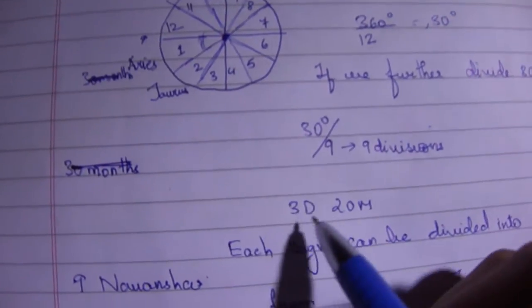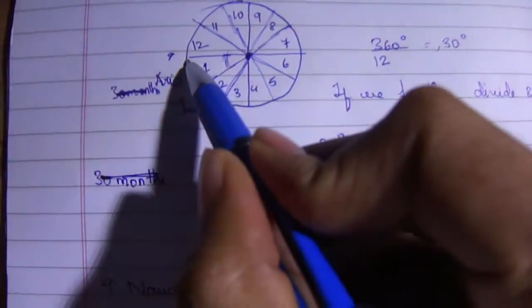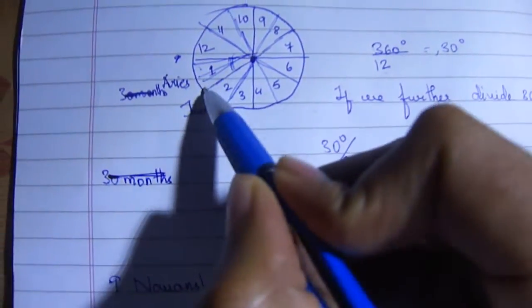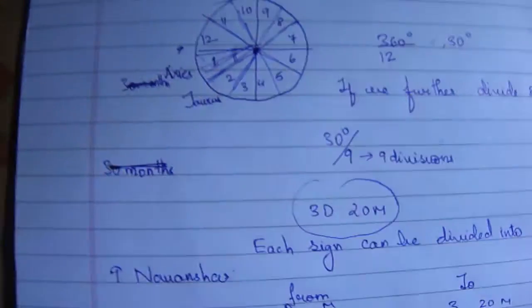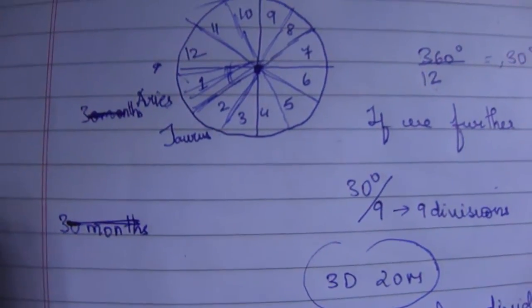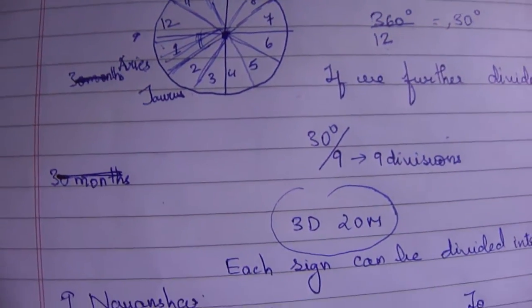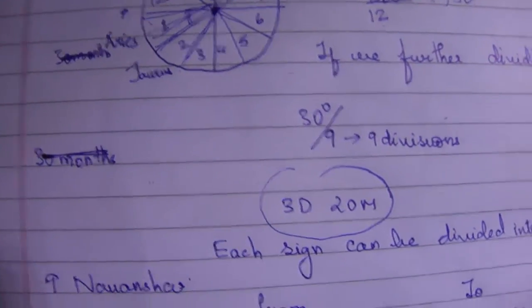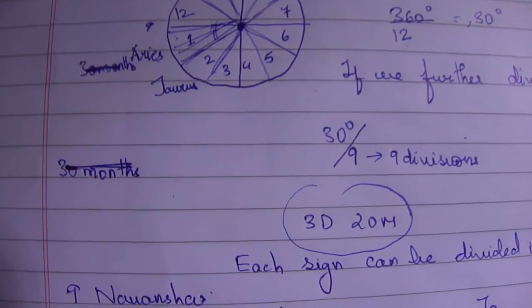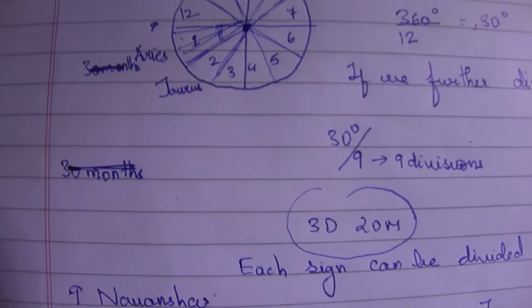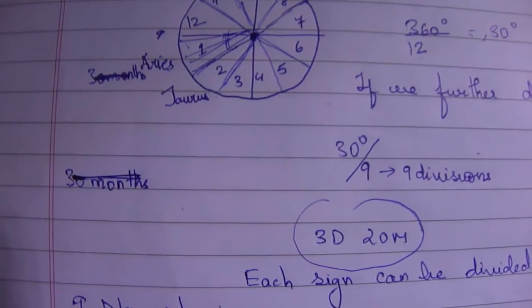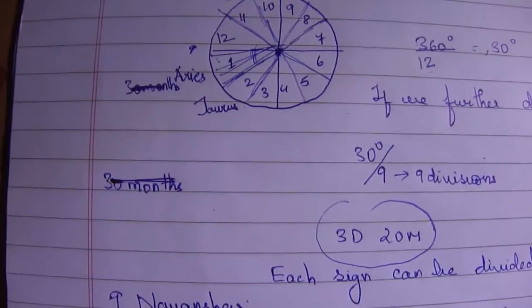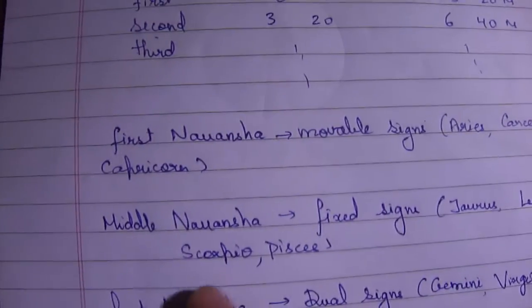That is each part, so it is further divided into nine parts. So each sign, sign number one, sign number two, is further divided into nine smaller parts. Now these nine parts are further classified as three parts: the first part is known as first Navamsha, the second part is referred to as the middle Navamsha, and the last is the last Navamsha.